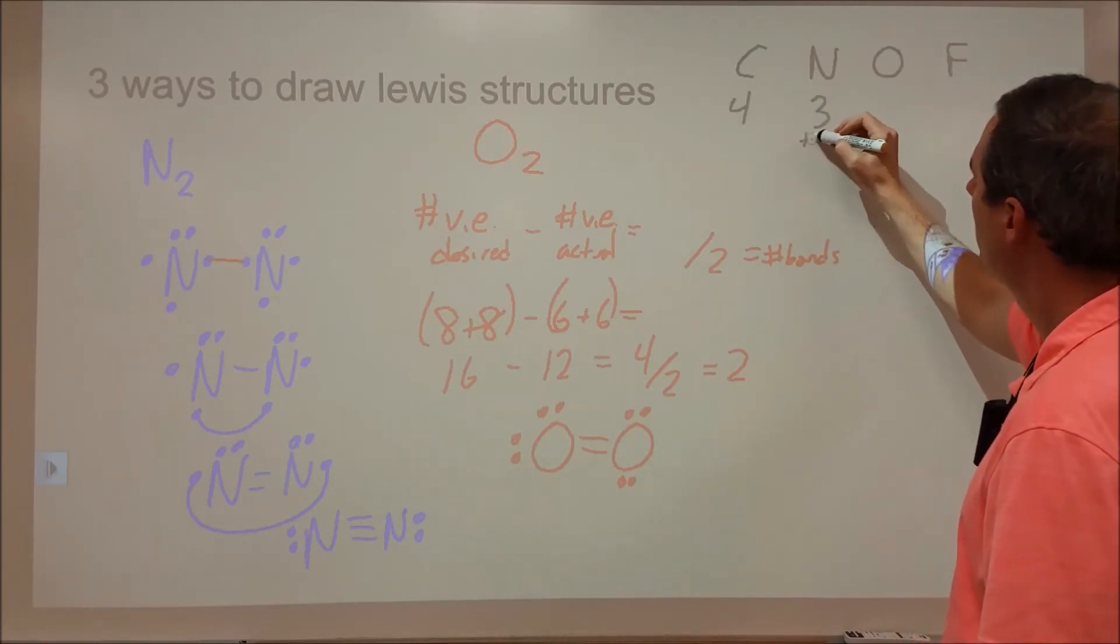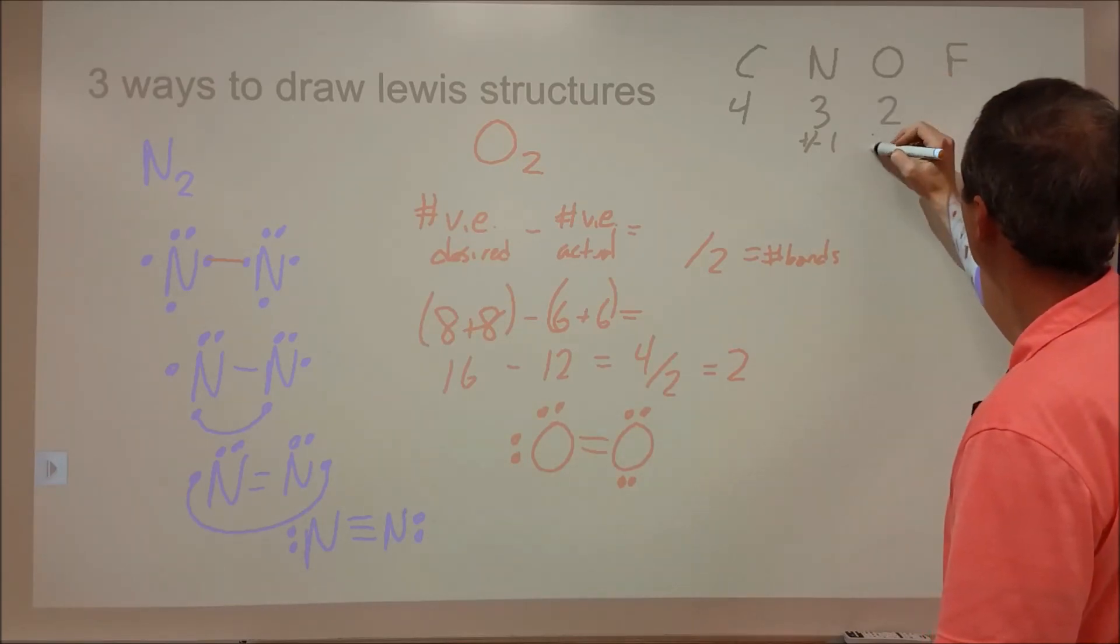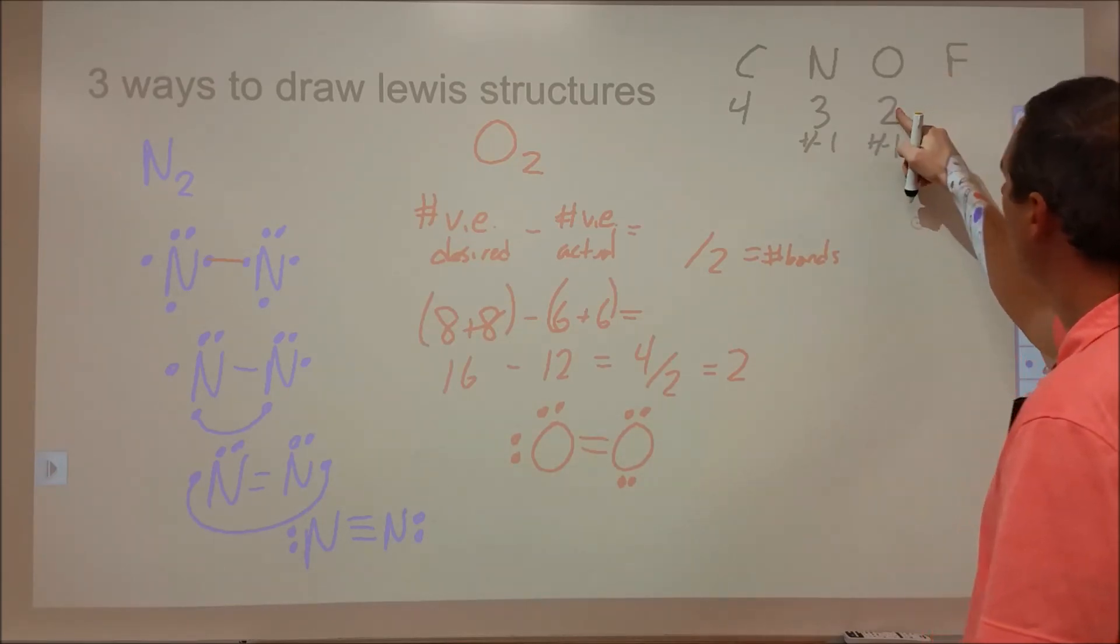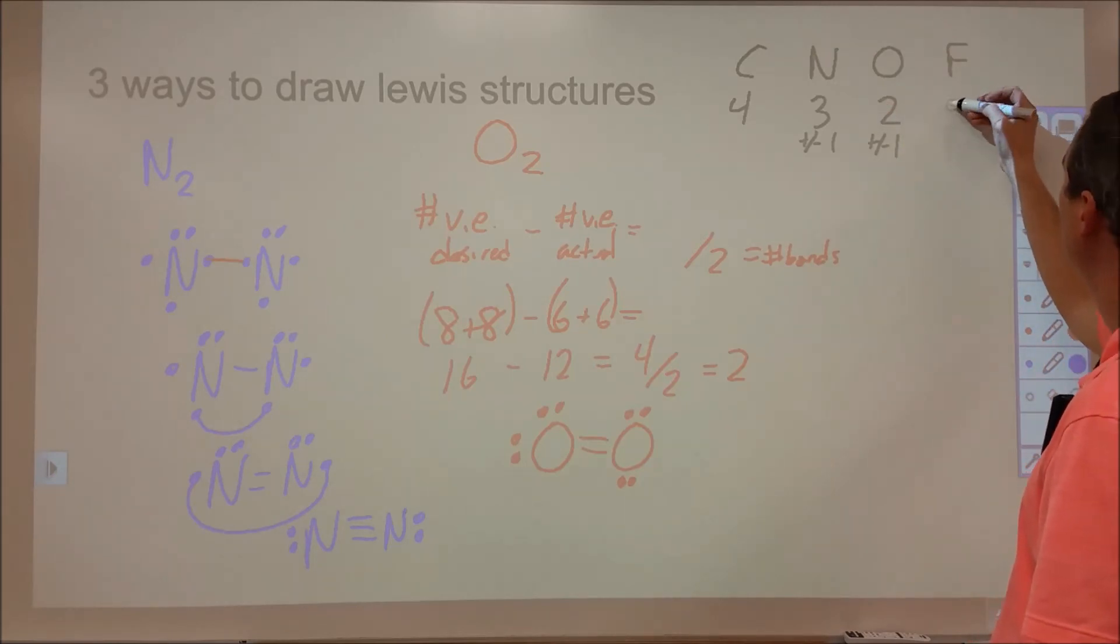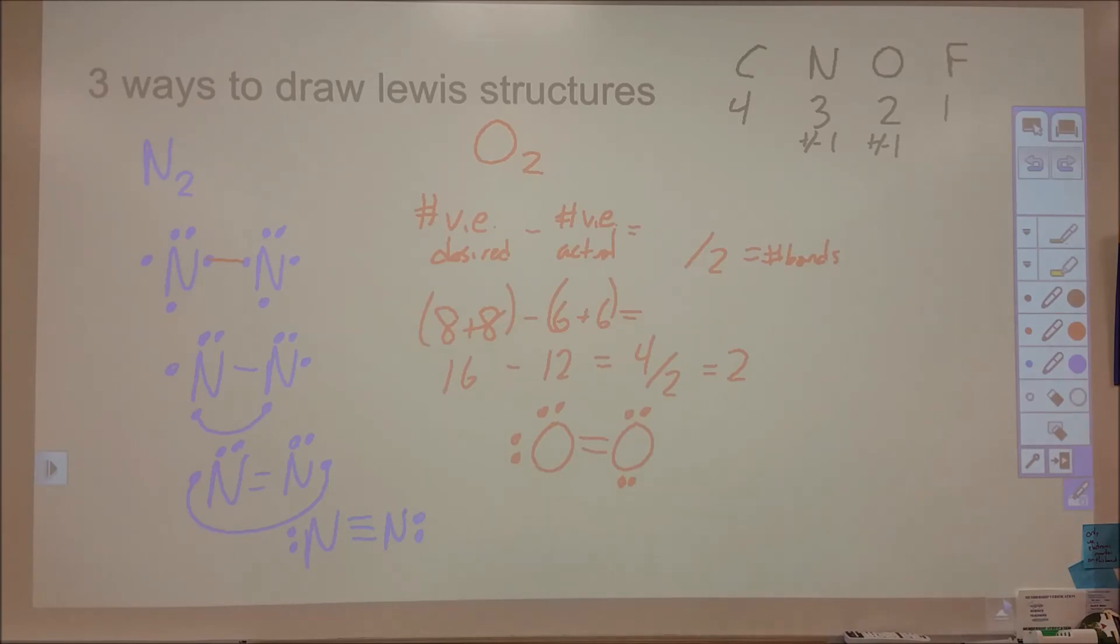Carbon's column tends to form 4 bonds. Nitrogen 3, although occasionally you'll end up with 2 or 4, and then oxygen 2, although occasionally you'll end up with 1 or 3, and then fluorine's column will usually be 1. There are some weird exceptions for that as you get into higher level chemistry.